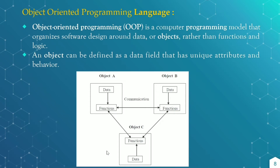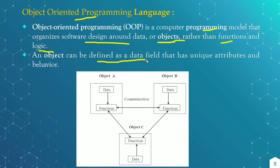Next is the Object Oriented Programming language. It is the computer programming model which organizes software design around data or objects rather than functions and logic. Object can be defined as a data field — called a variable in our programming languages — which has unique attributes and behavior. Objects A, B, and C are different objects and every object can have its own data and functions. Different objects can communicate through functions only, and every data is individual for every object.